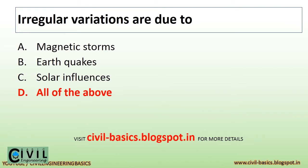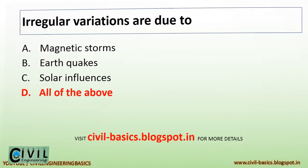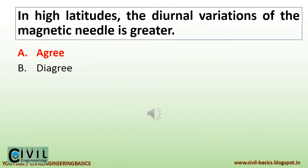Irregular variations are due to magnetic storms, earthquakes, and solar influences. In high latitudes, the diurnal variations of the magnetic needle are greater.